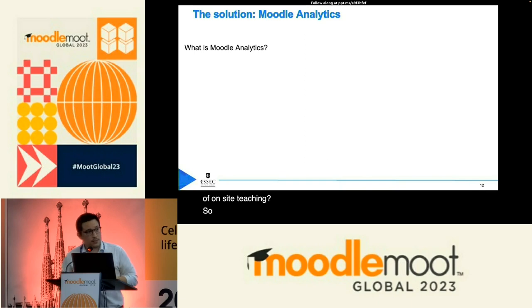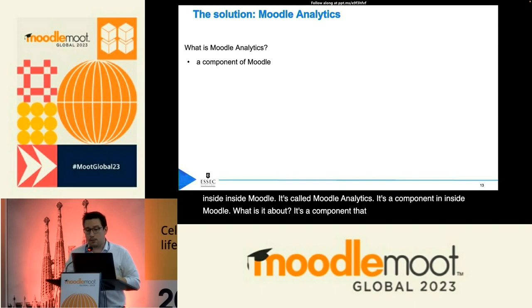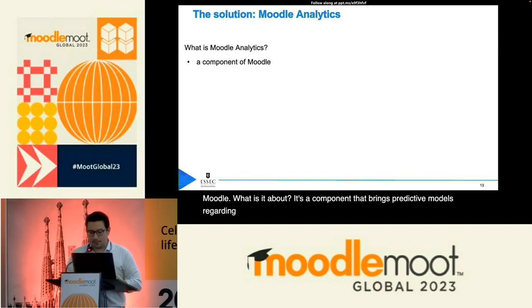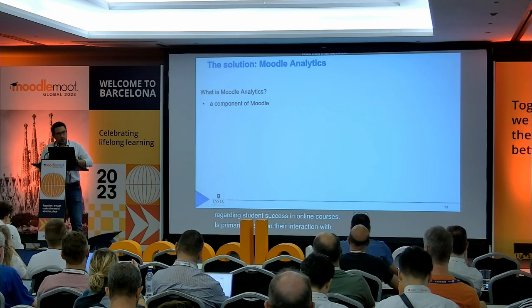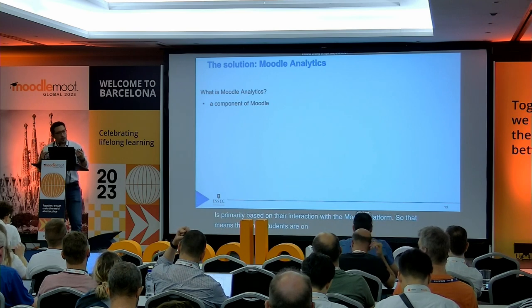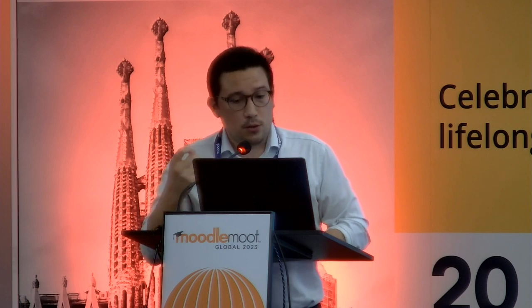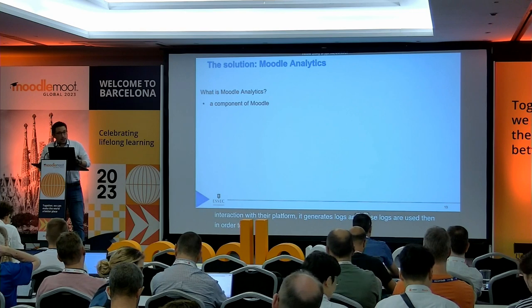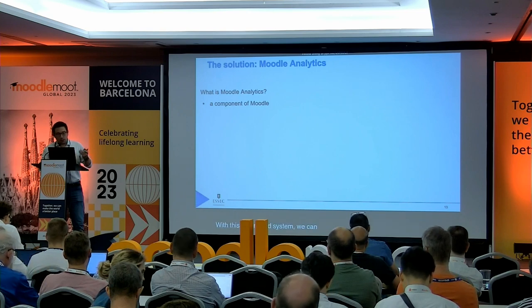We found a solution in Moodle. It's a component directly incorporated inside Moodle called Moodle Analytics. It brings predictive models regarding student success in online courses, primarily based on student interaction with the Moodle platform. When students are connected, their interactions generate logs, and those logs are used to analyze their likelihood to succeed. With this automated system, we can send notifications automatically to students at risk. I'm going to show you the platform just after.